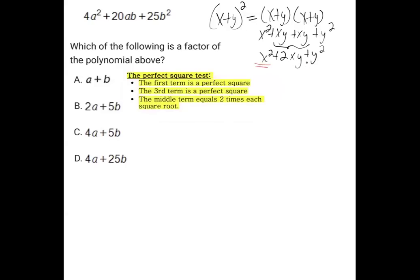The middle term, the third term, has to also be a perfect square. And the middle term is equal to two times each of those square roots.